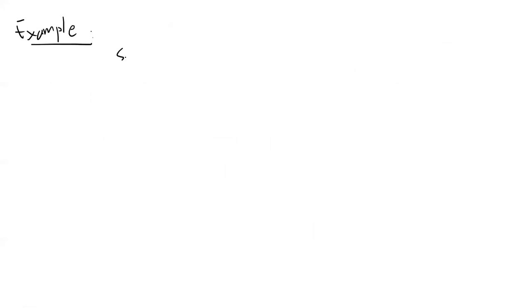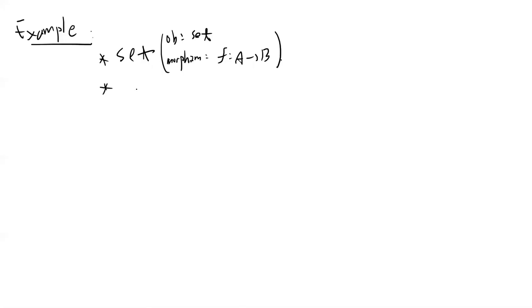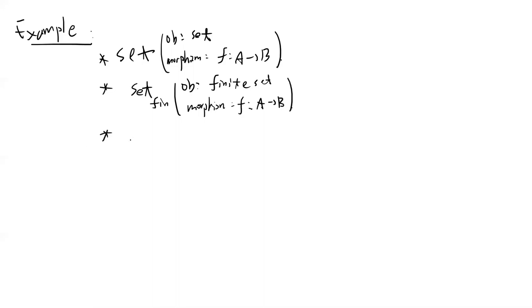Let's talk about examples. The first example is Set: the objects are all sets, and the morphisms are functions between two sets. Any function for any two sets — simple and easy to check it is a category. The second example is FinSet: objects are finite sets and the morphisms are functions between them.